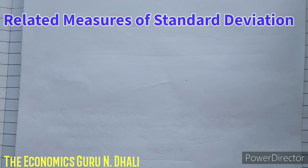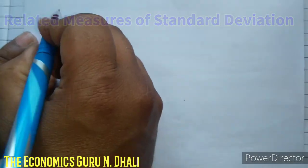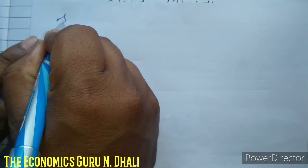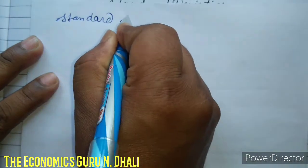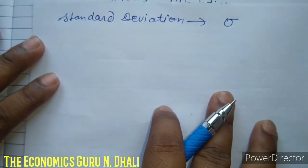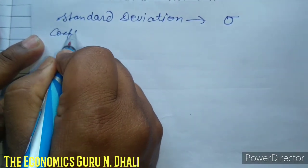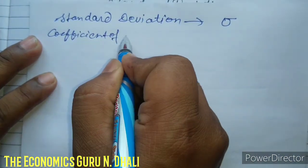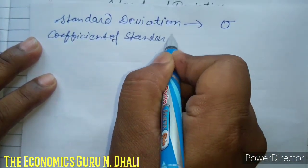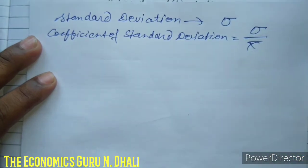Now we discuss the related measures of standard deviation. Watch carefully what is the related standard deviation. The symbol of standard deviation is sigma. The coefficient of standard deviation — the formula of coefficient of standard deviation is sigma upon actual mean.